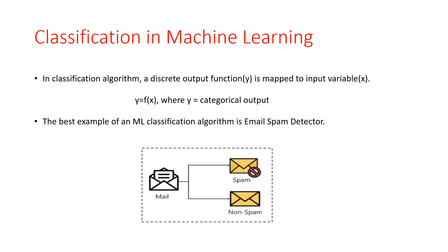Let us understand with a simple example. If some person has a heart disease problem, we have to detect this heart disease. Heart disease detection can be identified as a classification problem — specifically, a binary classification. In heart disease detection, there can be only two classes: has a heart disease or does not have a heart disease. The classifier needs training data to understand how the given input variables are related to the class, and once accurately trained, it can detect whether heart disease is present for a particular patient.